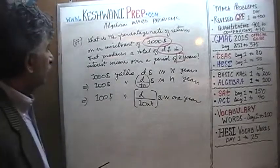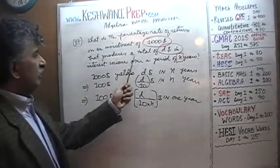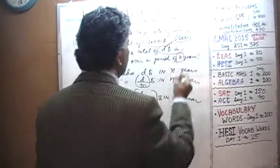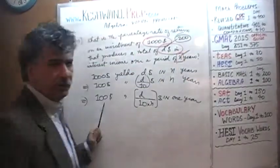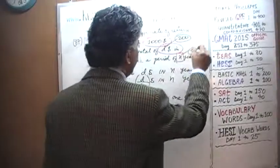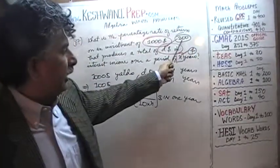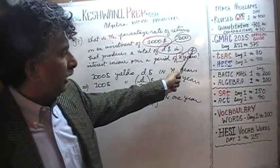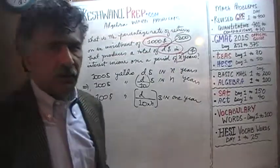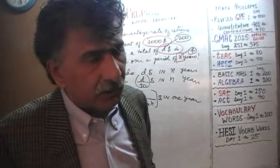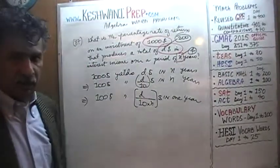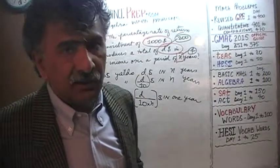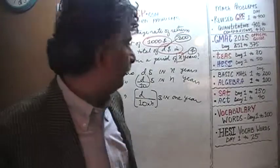Let's make it simple. An investment of $1,000 produces a total of — let's say $200, so D is $200 — over a period of how many years? Let's pretend it's 4. So if you're earning $200 over 4 years, you must earn $50 in 1 year. A return of $50 in 1 year on an investment of $1,000 translates into a 5% return.